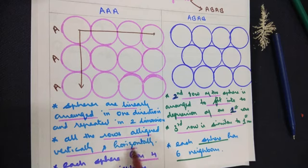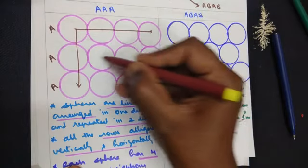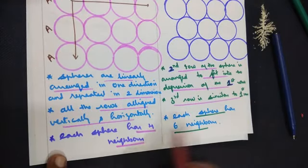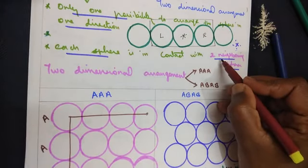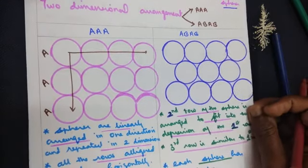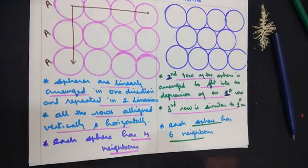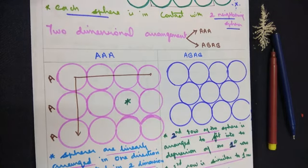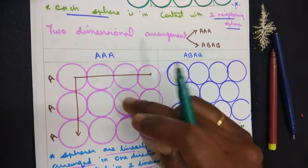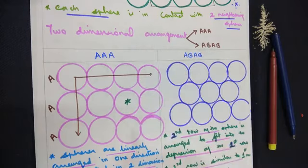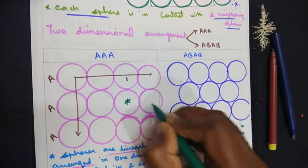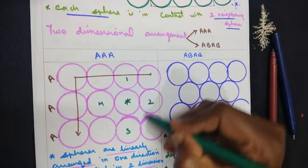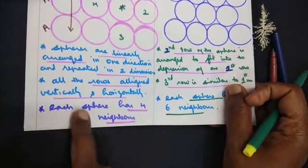All rows are aligned vertically and horizontally. Whether you take any column or any row, they are exactly one below the other. Each sphere has four neighbors. In linear arrangement there were two neighbors — one on the left and one on the right. Here let's calculate: for this particular sphere of interest, counting the surrounding spheres that are touching it — one, two, three, four. So this sphere has four neighbors.